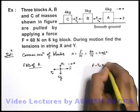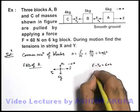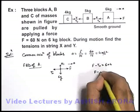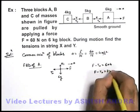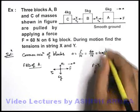F minus T_X is equal to 6 into A, that is 6 into 4. So F minus T_X can be written as 24, and here the value of T_X can be written as F minus 24